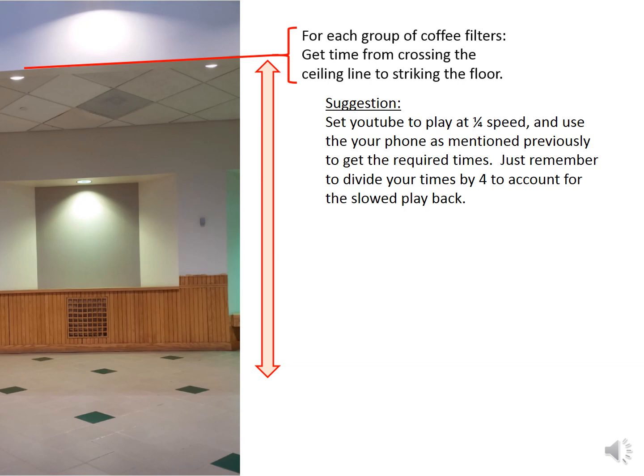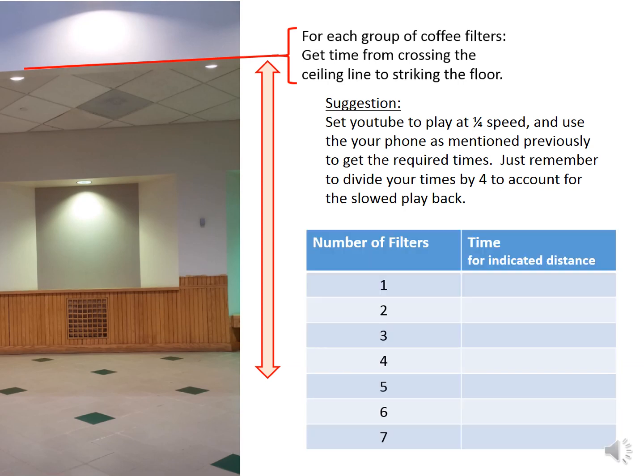Just remember, if you do this, to divide your time by four to account for the slowed playback. And in a notebook somewhere, keep track of the number of filters in the pack. We'll have a single filter up to a pack of seven.